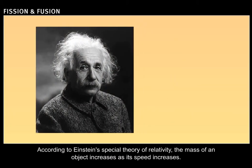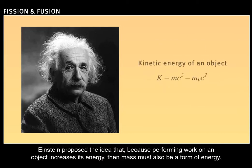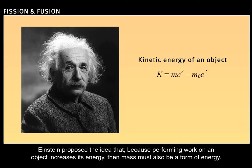According to Einstein's special theory of relativity, the mass of an object increases as its speed increases. Einstein proposed the idea that, because performing work on an object increases its energy, then mass must also be a form of energy.